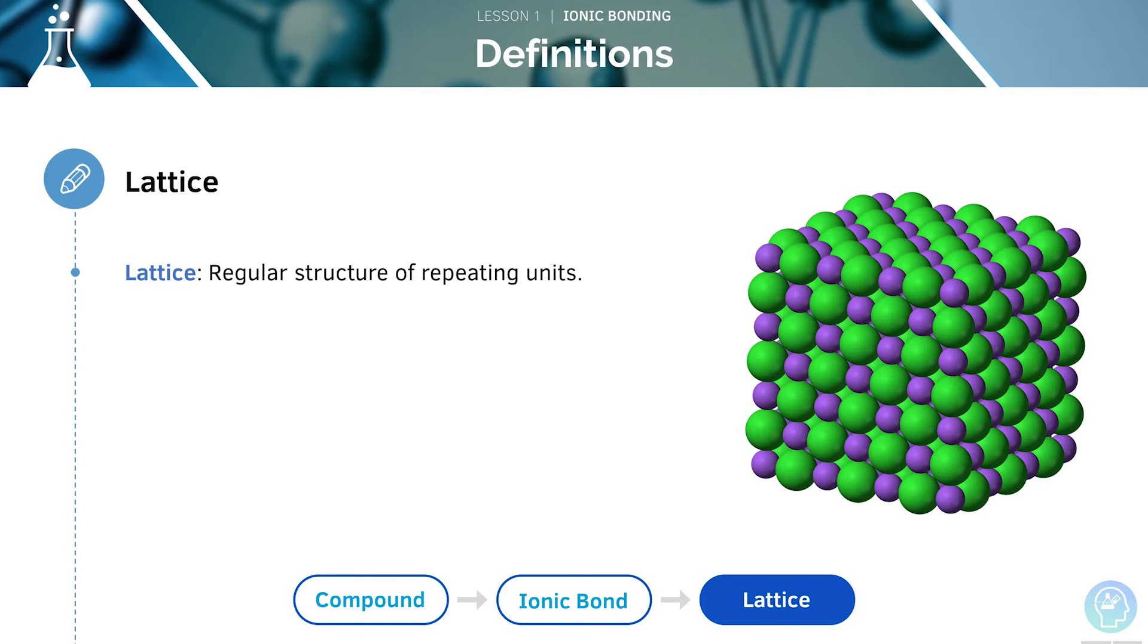A lattice is a regular structure of repeating units. As we can see here, this cube is a lattice, since the purple and the green dots are arranged in a uniform pattern.